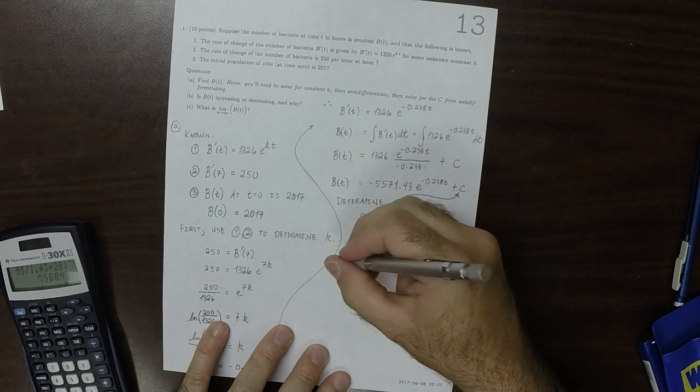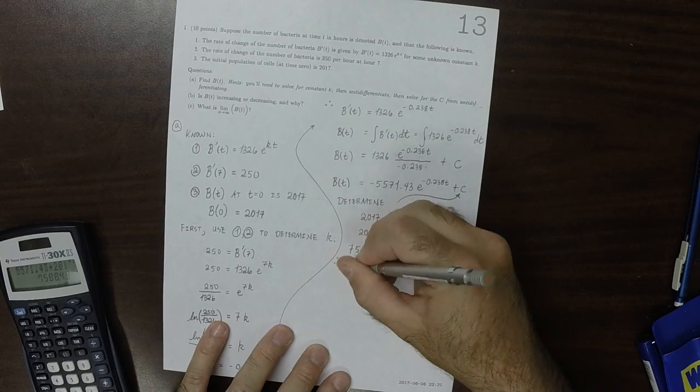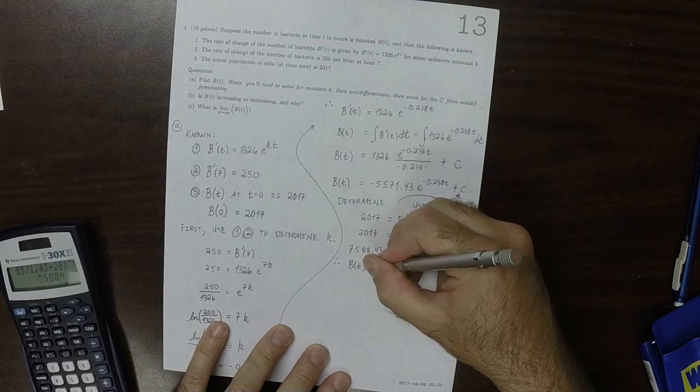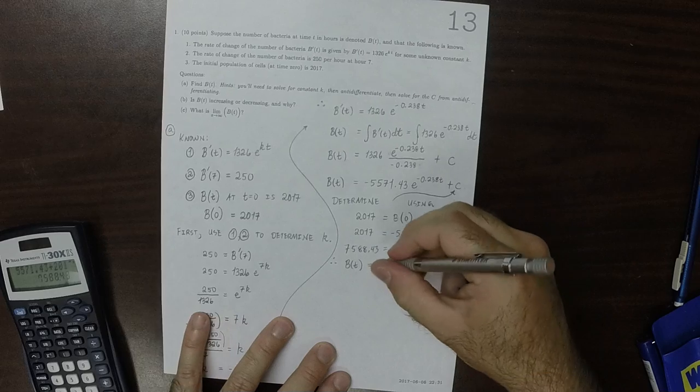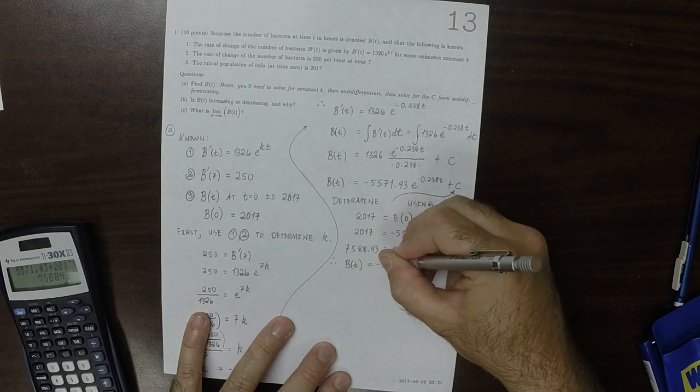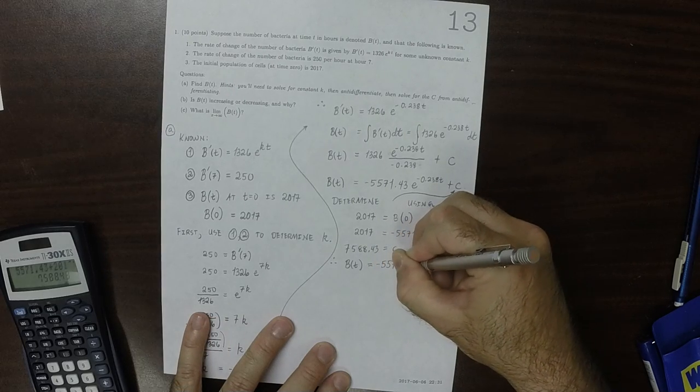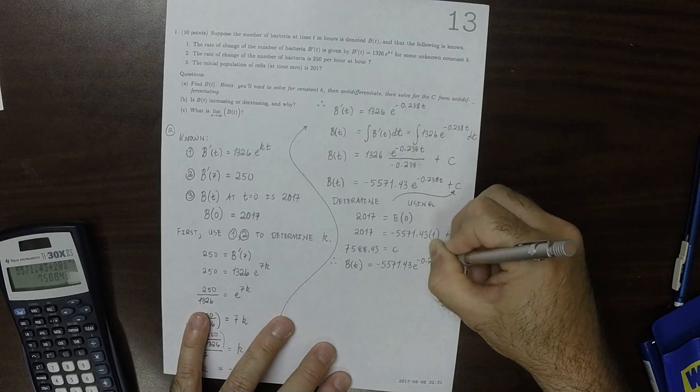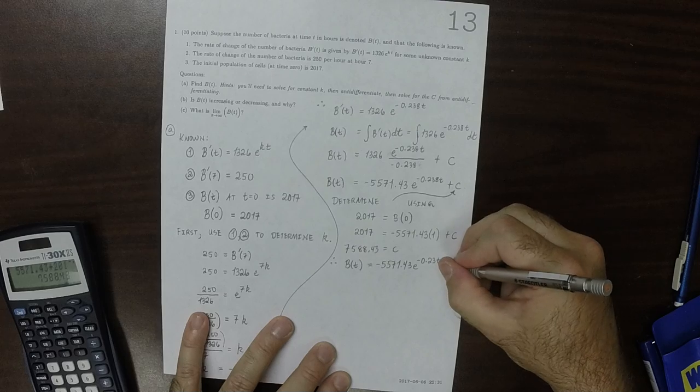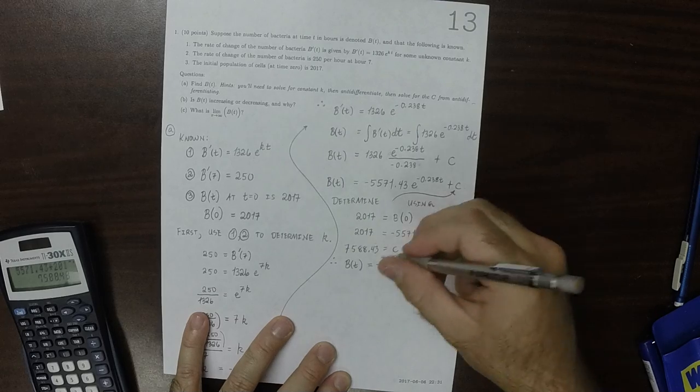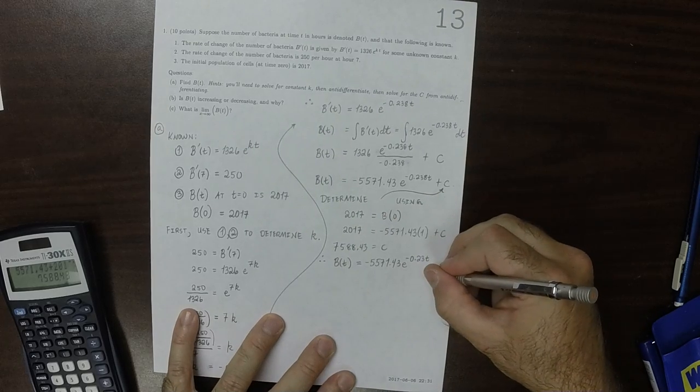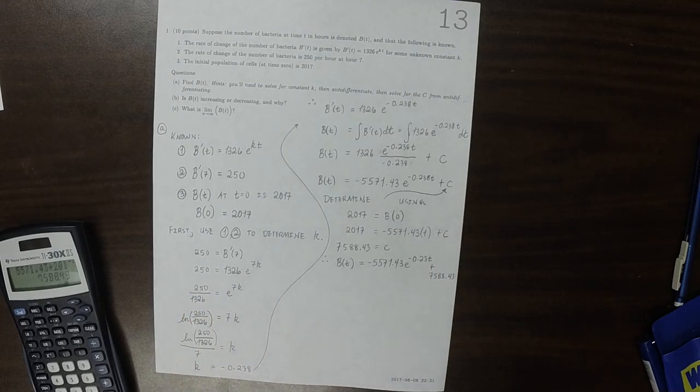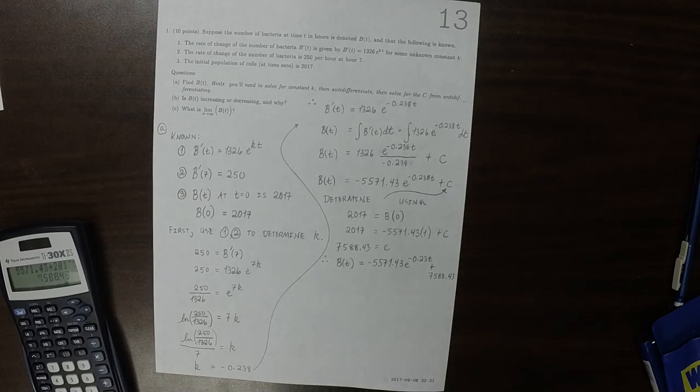And as a result, B(t) is negative 5,571.43 exponential negative 0.238 t and then plus that number 7,588.43. So that's the answer to part A.